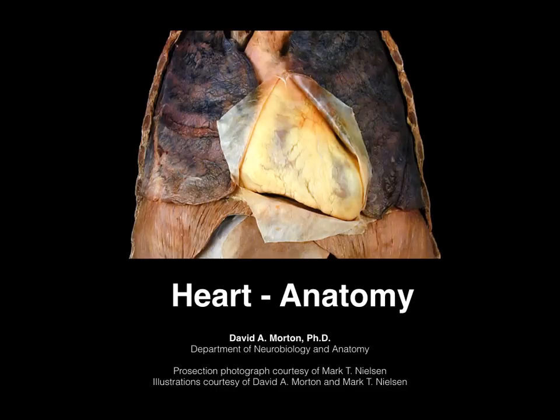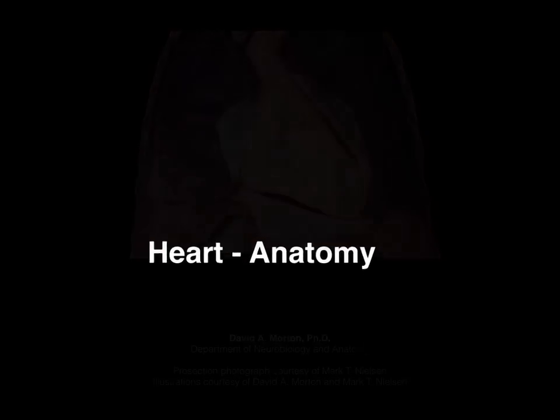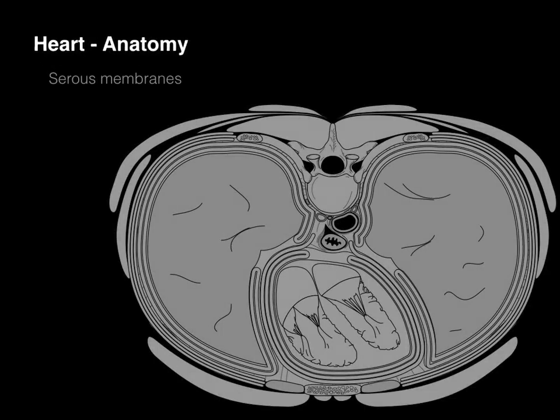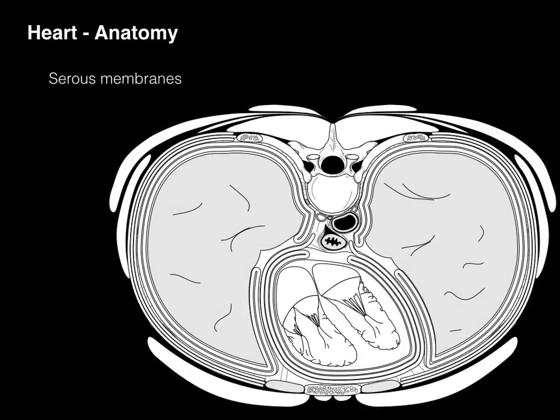Let's now talk about the anatomy of the heart. To start, let's describe the serous membranes surrounding the heart. The heart is enclosed within a three-layered pericardial sac. It protects the heart from overfilling and produces lubricating fluid. The three layers are the fibrous pericardium, parietal layer, serous layer, and a visceral layer.